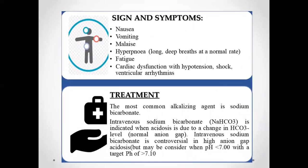Signs and symptoms of metabolic acidosis with elevated anion gap include nausea, vomiting, fatigue, cardiac dysfunction, hypertension, shock, and ventricular arrhythmias. The basic treatment is to give an alkalizing agent — sodium bicarbonate. IV sodium bicarbonate is indicated when acidosis is due to a change in bicarbonate level, and though controversial in high anion gap acidosis, may be considered when pH is less than 7, with a target pH of 7.10.